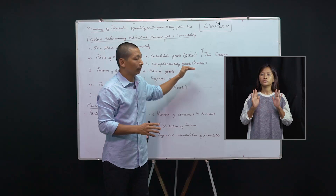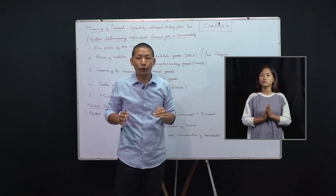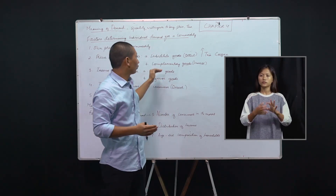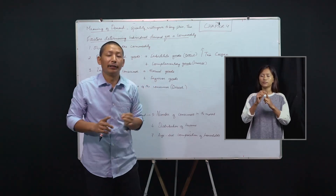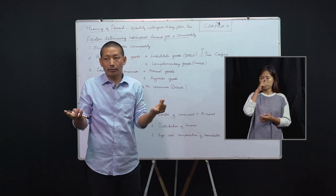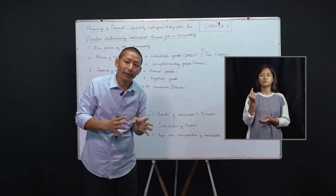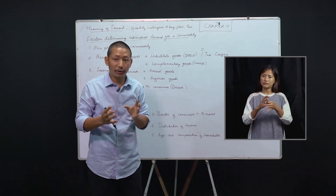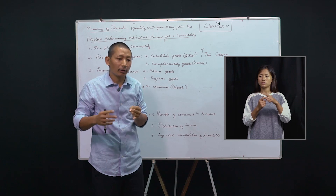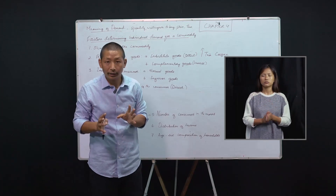Next, we have complementary goods. What are complementary goods? Those goods which are required jointly or used jointly are called complementary goods. For example, a pen and ink — without ink, the pen is not useful; without the pen, the ink is also not useful. They are required jointly. Similarly, without petrol, it becomes harder for the car to run. Without a car, petrol is also not as useful. So petrol and car are also complementary goods.